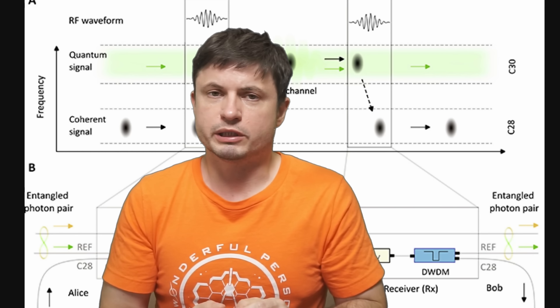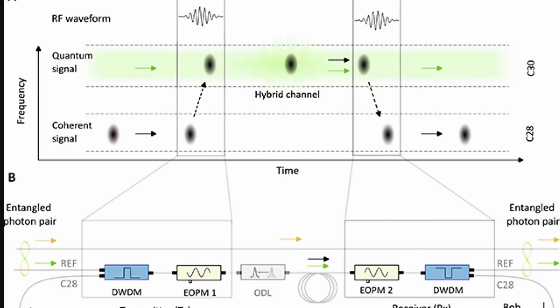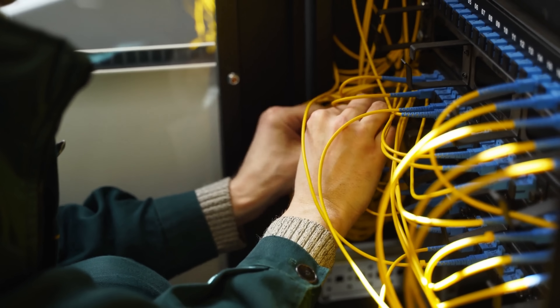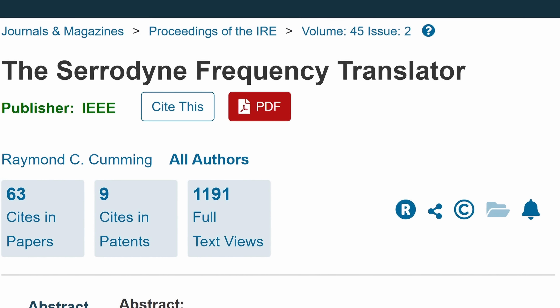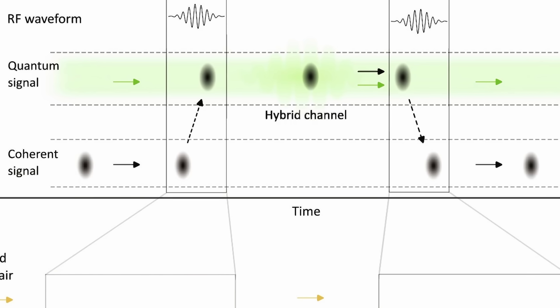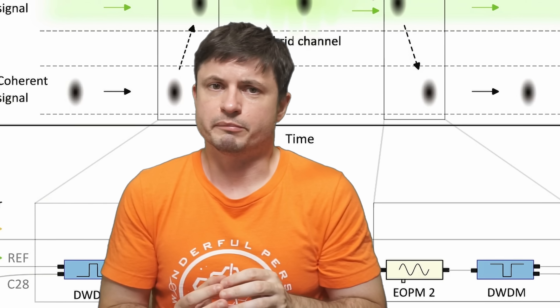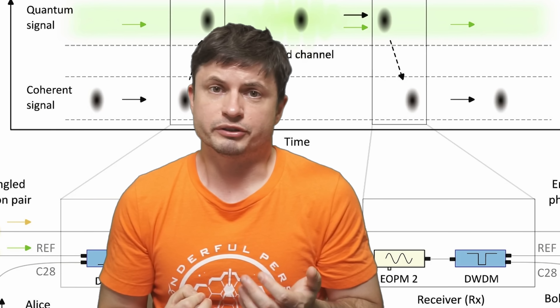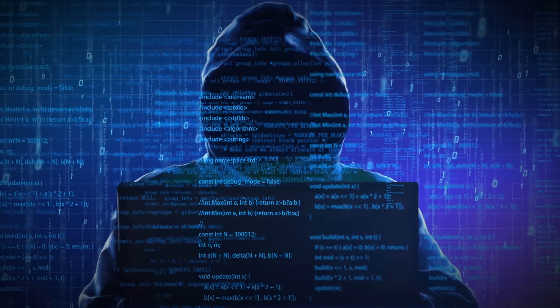As of 2024, quantum computers remain in a bit of a limbo — great on paper, but we don't really know what to do with them. There might be at least two potential uses, and one was revealed by researchers from Leibniz University Hannover. This was one of the first tests of a quantum internet — an experiment combining quantum information with classical information using typical optical fibers that internet providers already use, via a technique known as serodyne frequency translation.